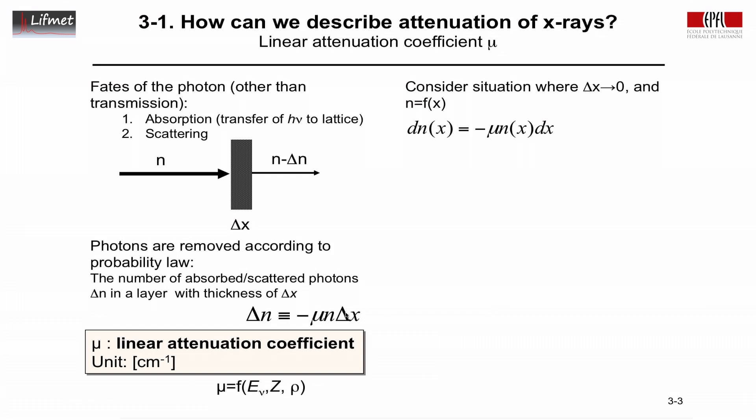So if we do that, then we can replace the difference in photons, this equation here, with the infinitesimal equation. So delta n will go to zero, so it will be dn infinitesimal. Delta x will go to zero, so it will be replaced by the term dx. And we will obtain now the differential equation that the derivative of the number of photons as a function of position is equal to minus μ times the number of photons at that position.